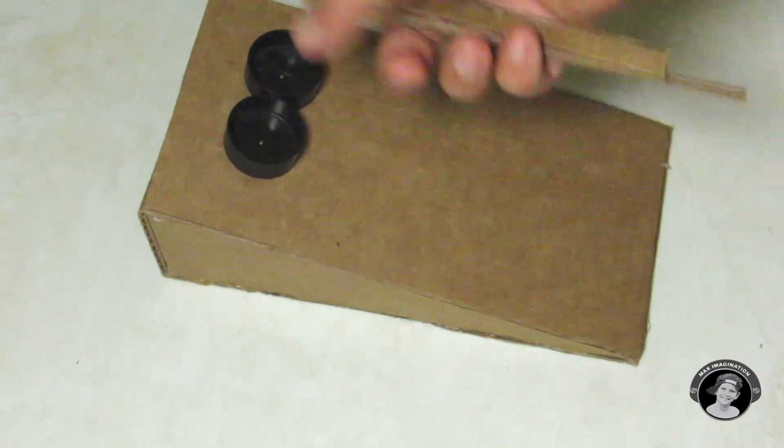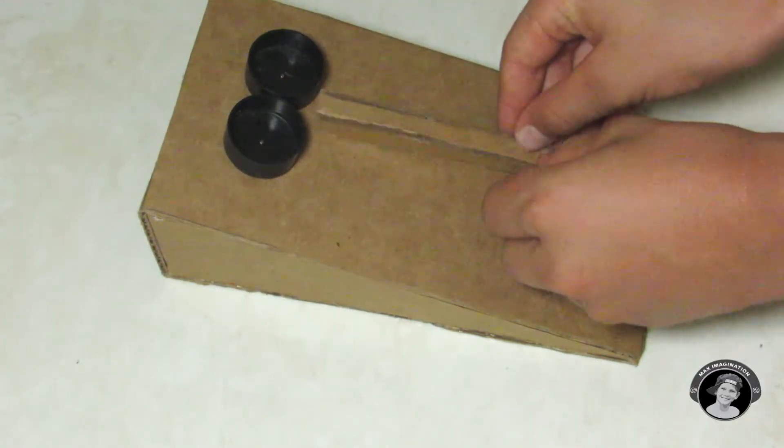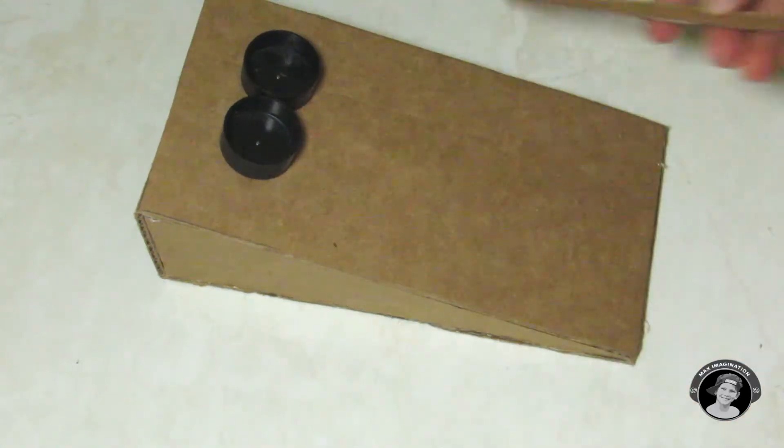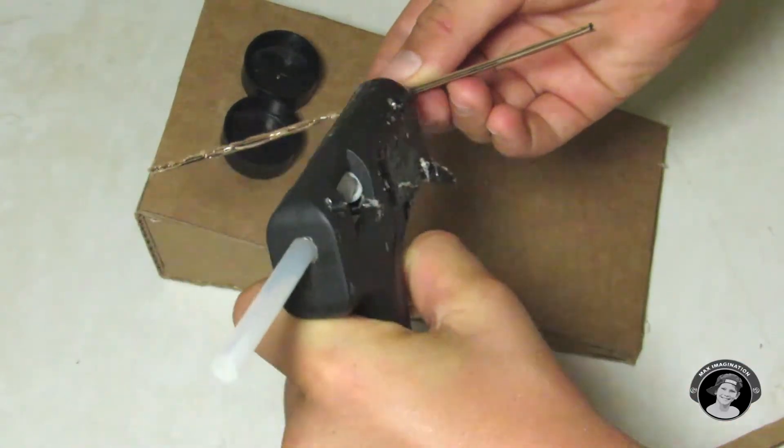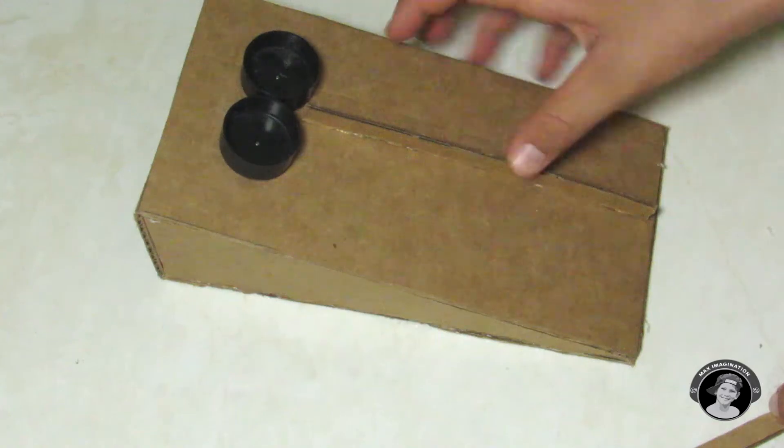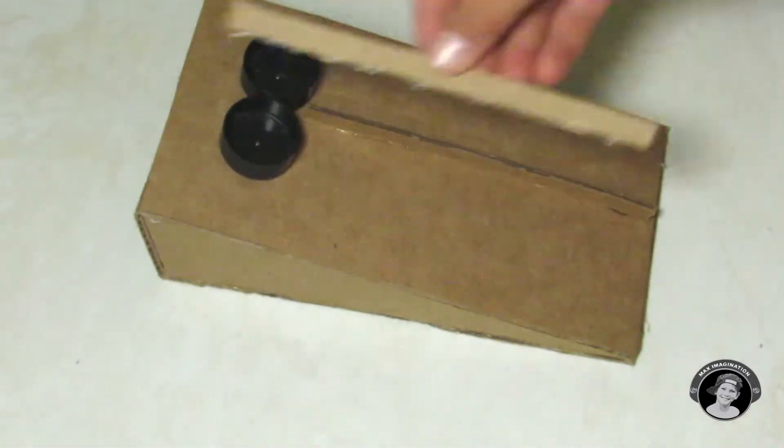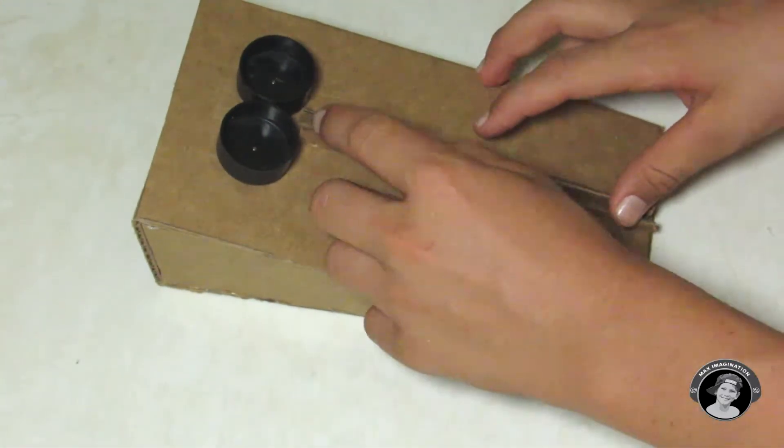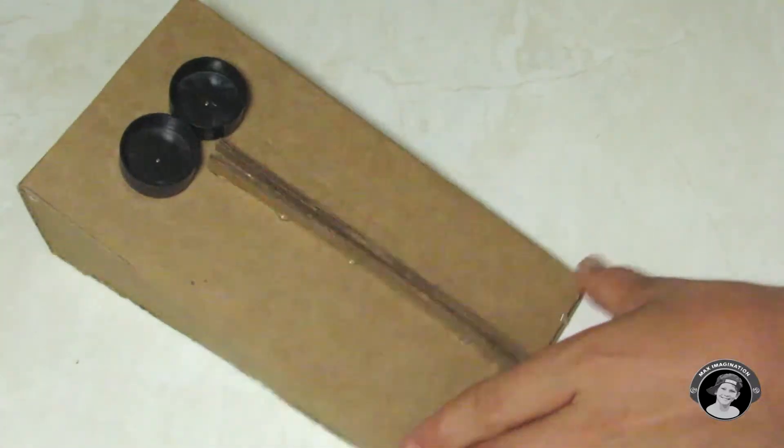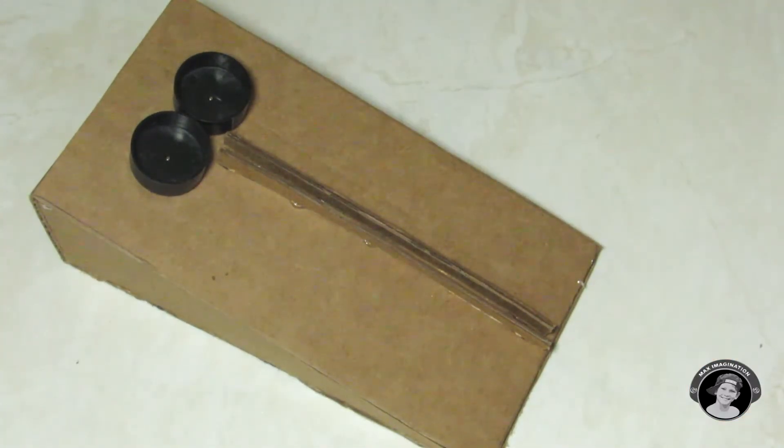So now we're going to glue these two aligners on so when you're pushing the paper airplane through it's not going to go sideways and it'll go much straighter. They'll be sitting like right about here, let's glue them on. So now our paper airplane launcher is complete.